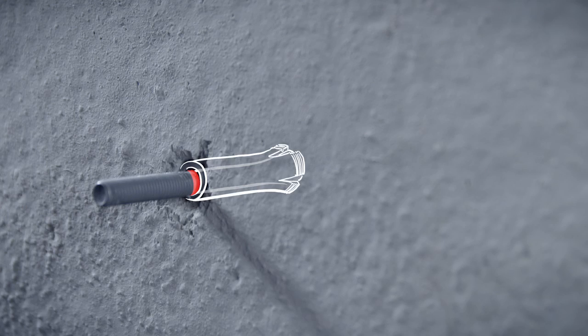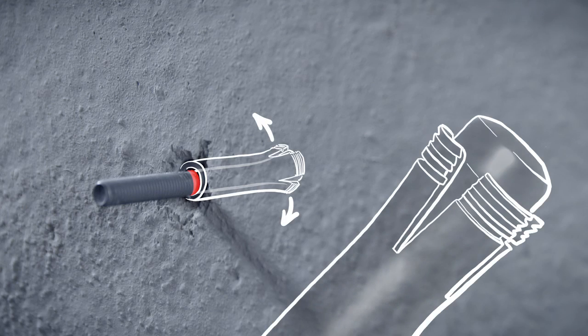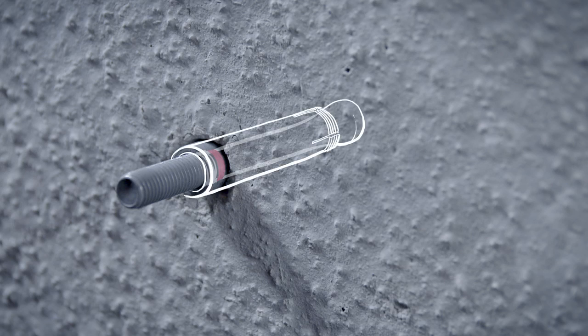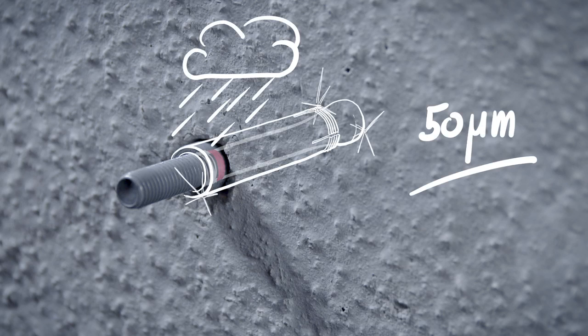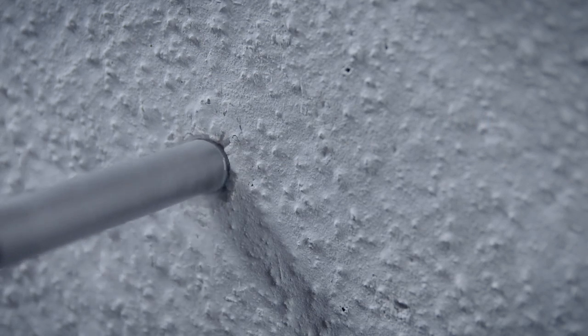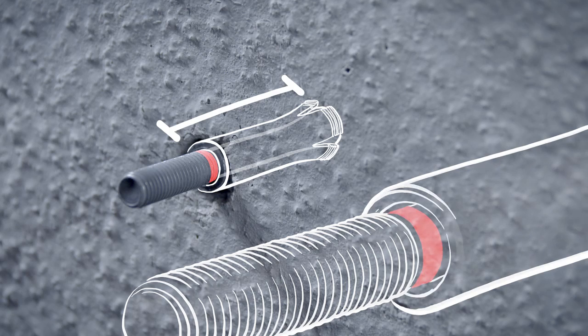The high quality undercut of the HMU guarantees a safe and reliable mechanical interlock. The HMU comes standard with a 50 micrometer galvanized coating for increased corrosion resistance. A red setting mark assures simple verification of a proper undercut created by the installer.